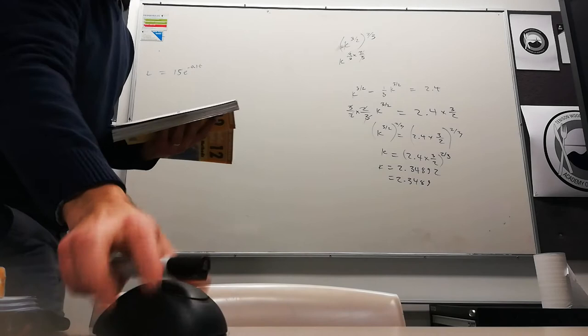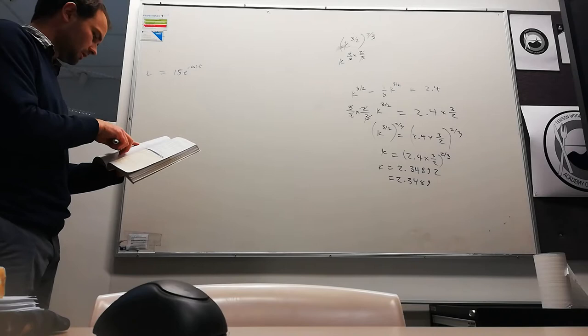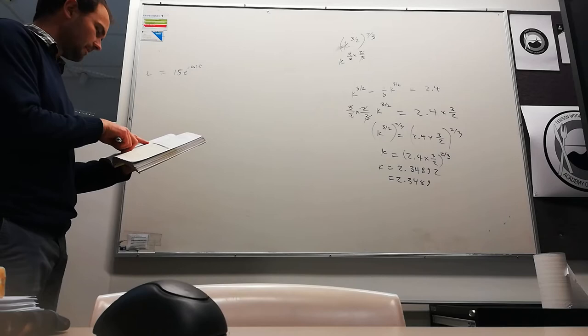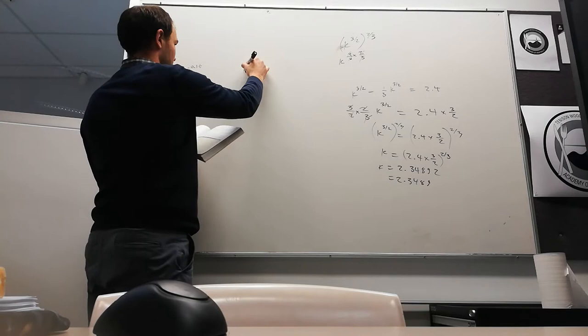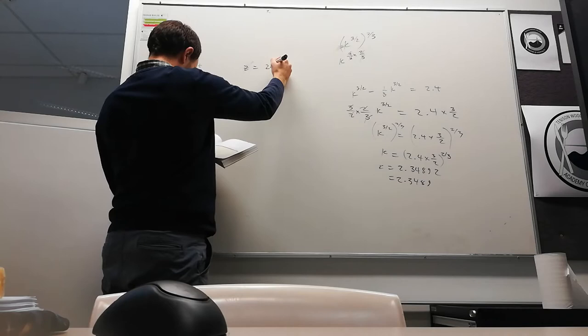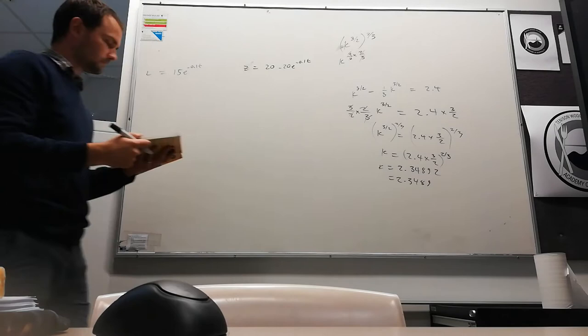Alright, so we've got, if we look at this question, we've got a lion is chasing a zebra. The zebra notices the lion when it's 40 meters away. From this time, the lion approaches with this speed and the zebra runs away with this speed. So the zebra is 20, take 20 is minus 0.12.